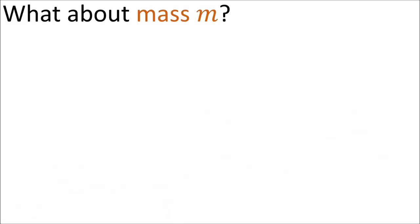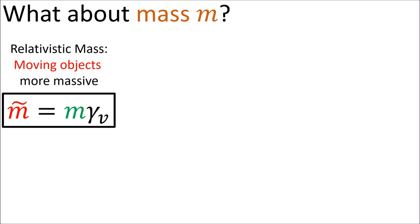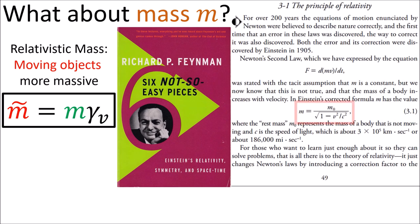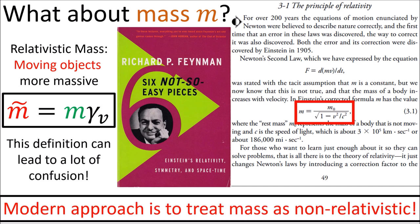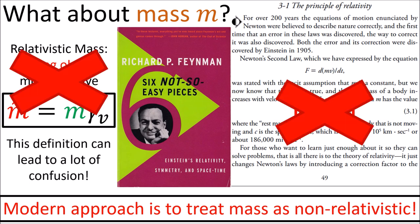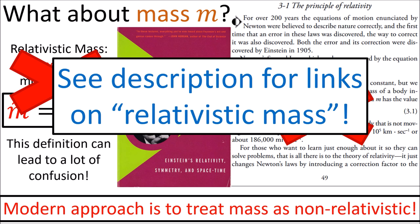Now one last thing — some viewers might have noticed that I haven't spoken about mass in this video. There is a concept called relativistic mass where fast moving objects increase in mass due to the Lorentz factor, similar to how time dilation works. I was taught this concept in university, and it's also described in physics lecture notes by the famous physicist Richard Feynman. However, many physicists, including Einstein, began to question the concept of relativistic mass after it was introduced. They found that the concept of relativistic mass can sometimes be useful in some specific circumstances, but in general it's a messy concept that leads to a lot of confusion. Modern approaches to relativity treat mass as a non-relativistic quantity, but I will wait until a later video to explain the details. You can check the description for links on the topic of relativistic mass if you want to learn more.